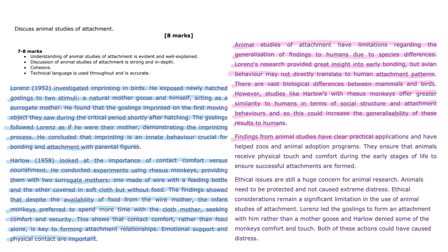Findings from animal studies have clear practical applications and have helped zoos and animal adoption programmes. They ensure that animals receive physical touch and comfort during the early stages of life to ensure successful attachments are formed. Ethical issues are still a huge concern for animal research — animals need to be protected and not caused extreme distress. Lorenz led the goslings to form an attachment with him rather than a mother goose, and Harlow denied some of the monkeys comfort and touch. Both of these actions could have caused distress.